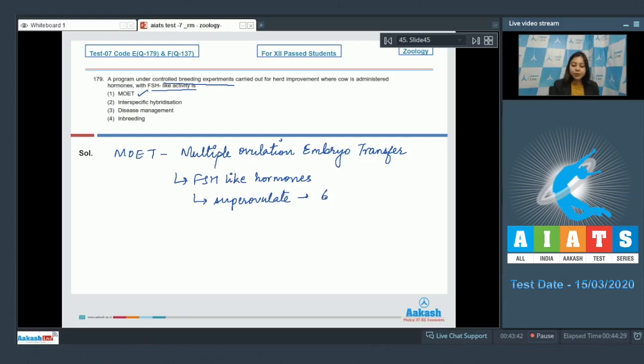that is, the cow now produces six to eight eggs instead of one which it used to produce before. Once the cow has super ovulated, it is artificially inseminated so that fertilization occurs and many embryos are formed. These many embryos are now implanted in the uterus of surrogate mothers.